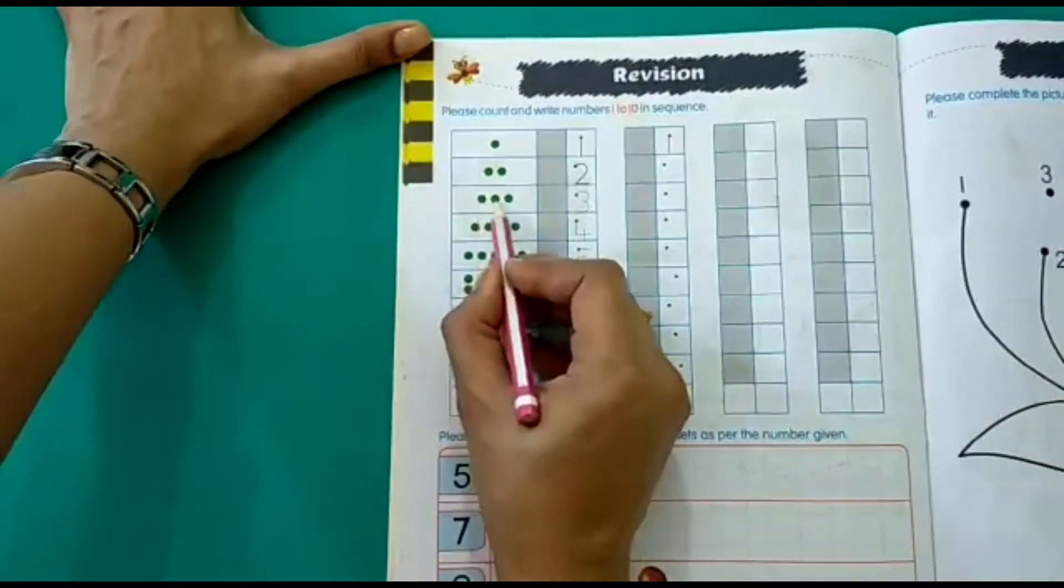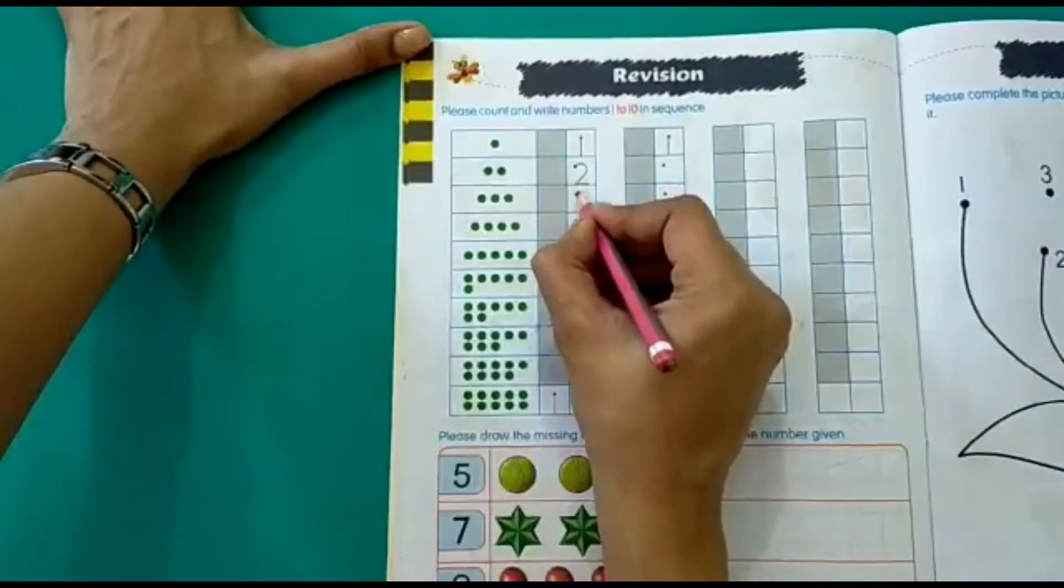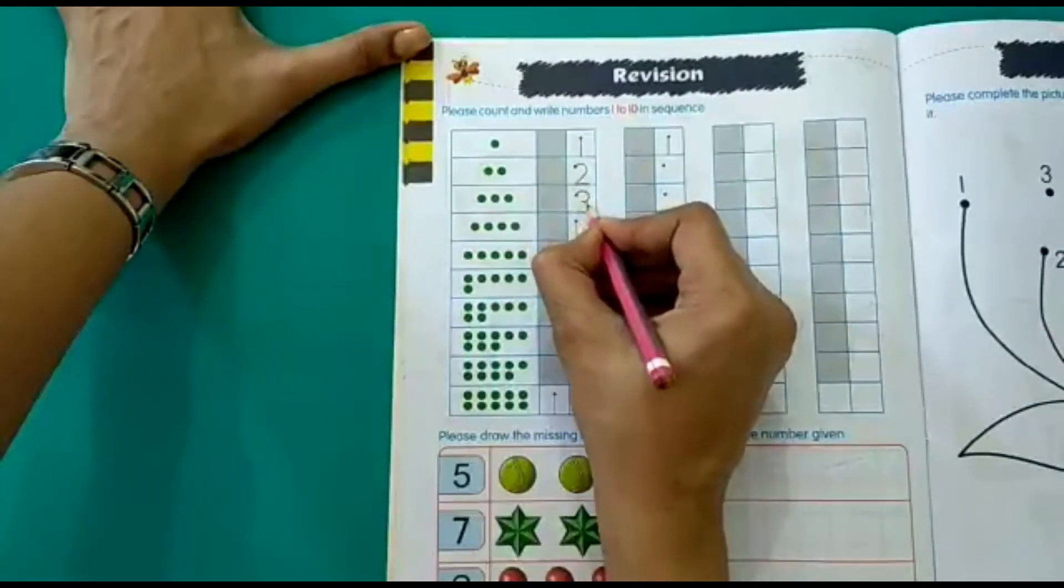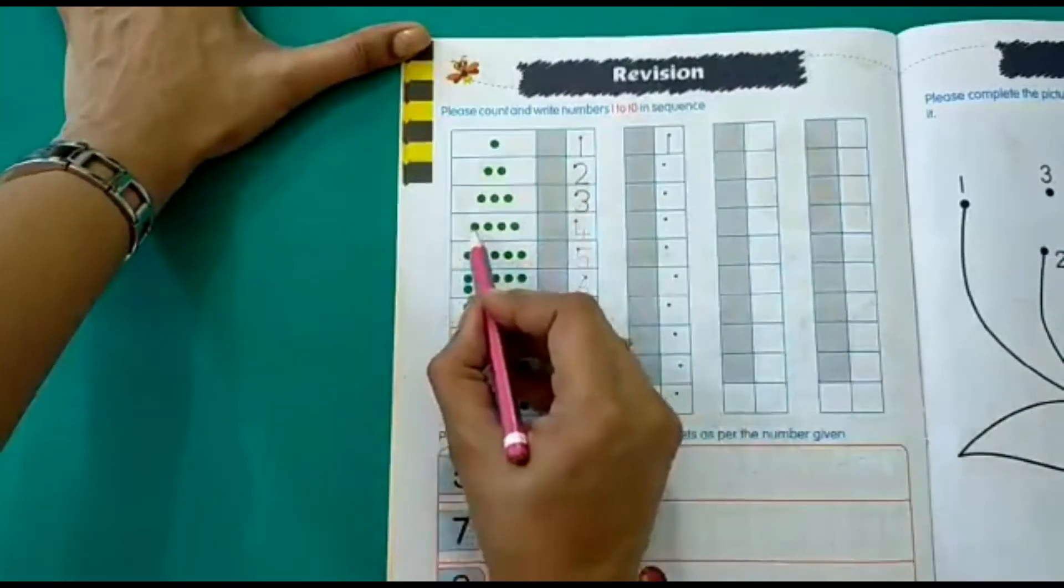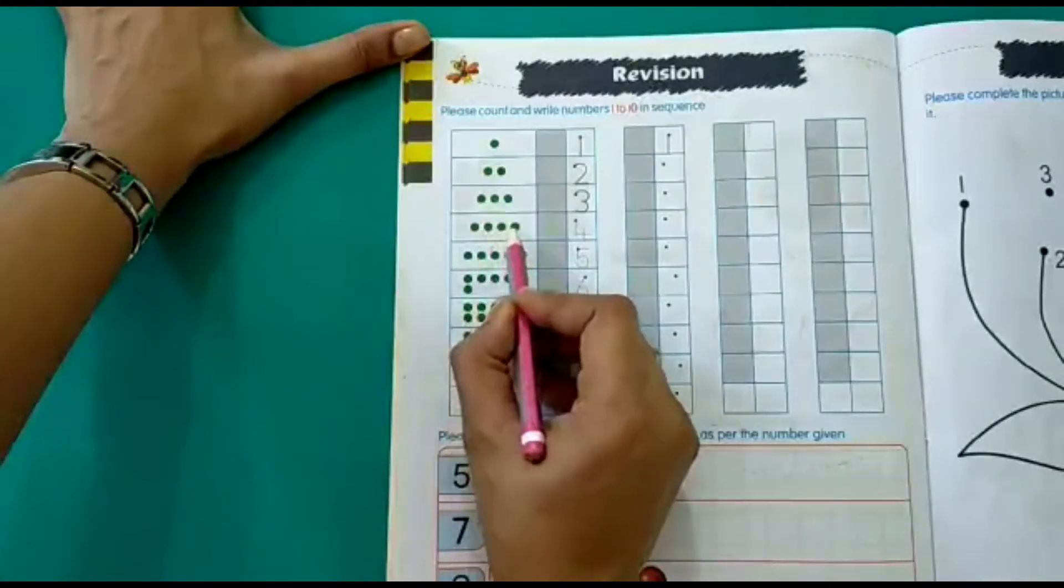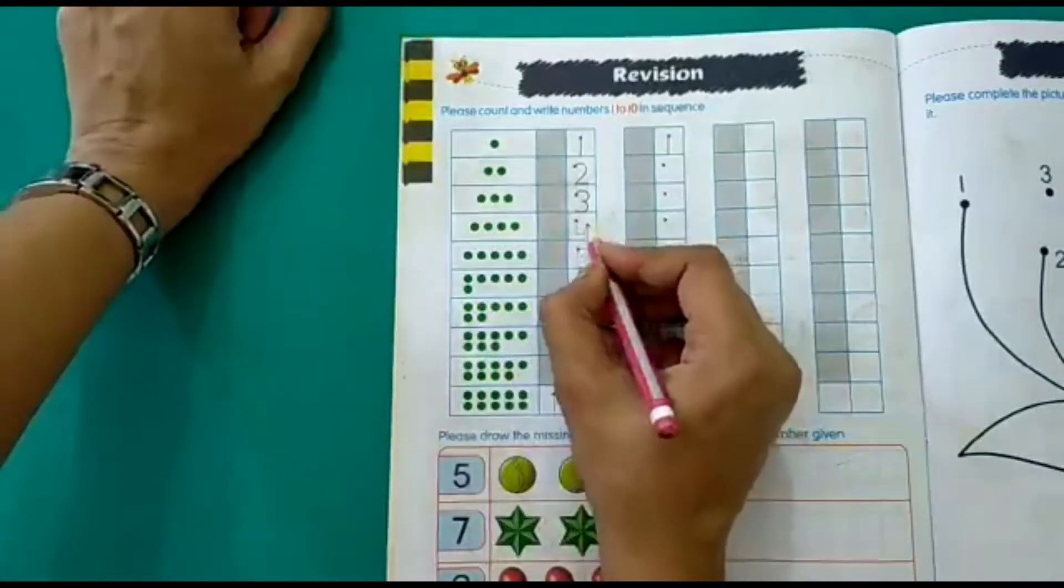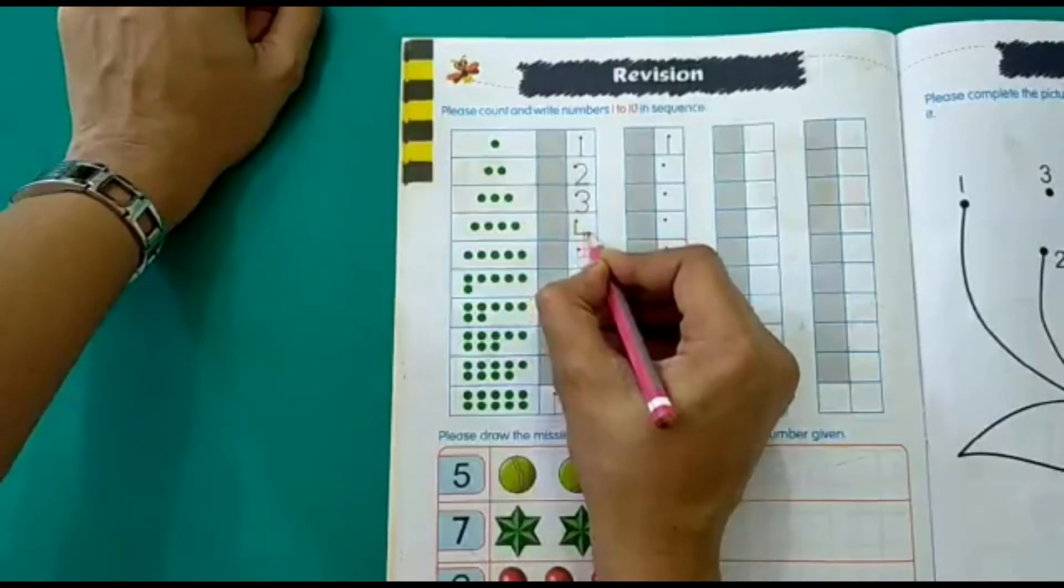The third box has 1, 2, 3. So we will write 3. Next box has 1, 2, 3 and 4. So we will write number 4.